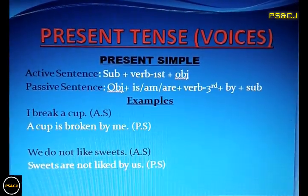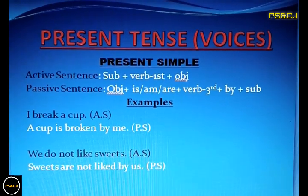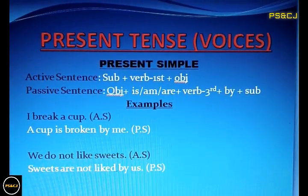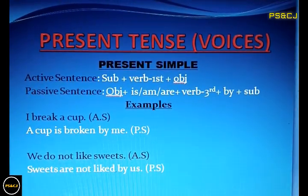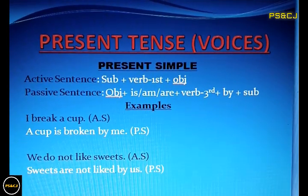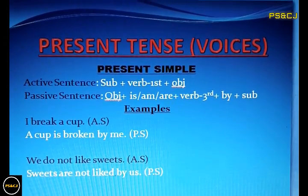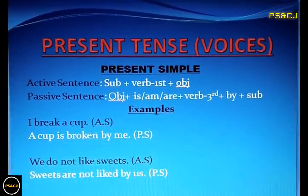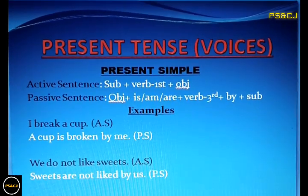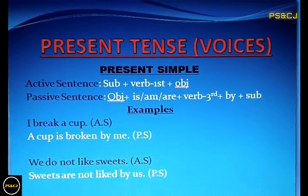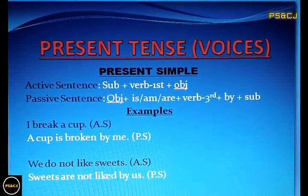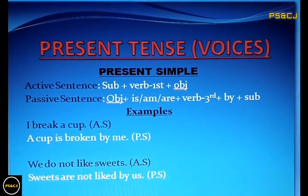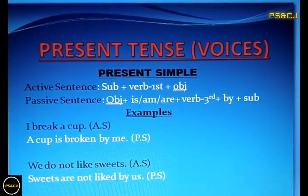The next example is negative: 'We do not like sweets.' In a negative sentence, you have to put 'not' between the helping verb and the main verb. For example: 'Sweets are not liked by us.'